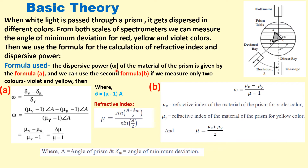We can then use the formula for calculation of refractive index and dispersive power. The dispersive power omega of the material of the prism is given by formula A for three colors: omega equals delta V minus delta R divided by delta Y, where these are the angles of deviation for violet, red, and yellow color.